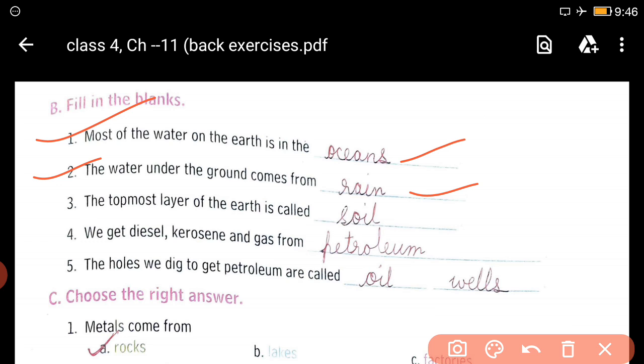Three, the topmost layer of the earth is called soil. We get diesel, kerosene, and gas from petroleum. Petroleum is extracted and when it is purified we get diesel, kerosene, and gas.